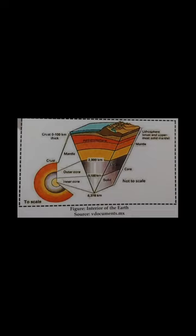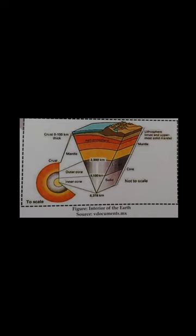The crust is the outermost solid part of the earth. It is brittle in nature. The main thickness of oceanic crust is five kilometers, whereas the continental crust is around 30 kilometers. Oceanic crust is thinner compared to continental crust, which is thicker in areas of major mountain systems. The density of material in the continental crust is 2.7 grams per centimeter cube.